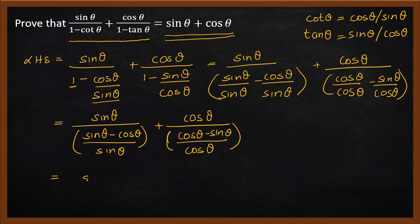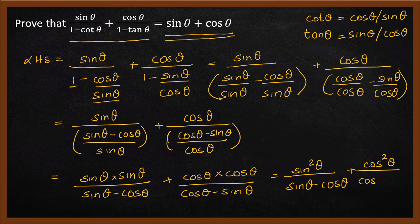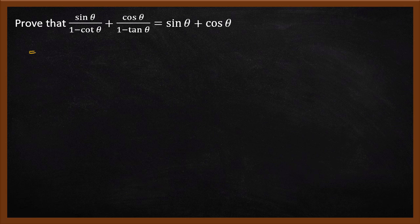We can see sin theta multiplied by sin theta divided by sin theta minus cos theta — that is the first term. The second term is cos theta multiplied by cos theta divided by cos theta minus sin theta. So we get sin squared theta divided by sin theta minus cos theta, plus cos squared theta divided by cos theta minus sin theta.